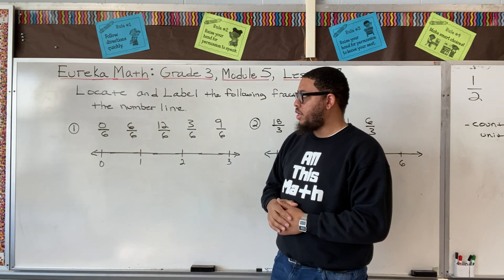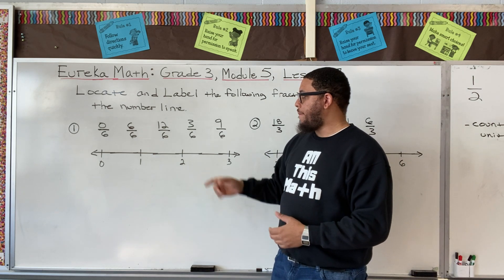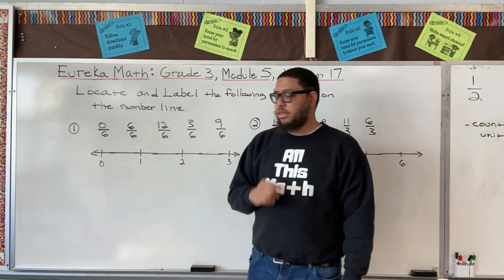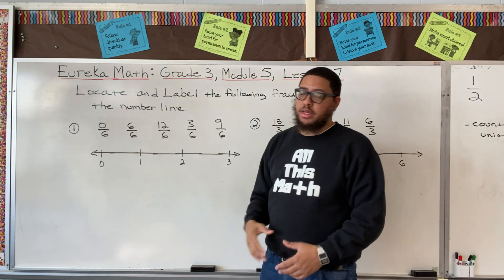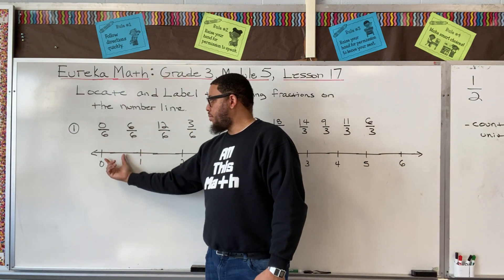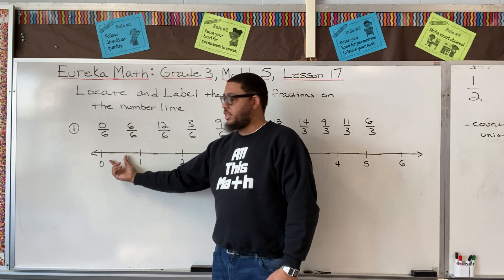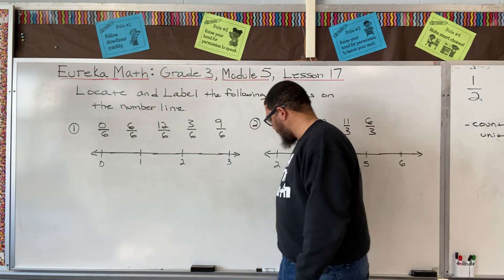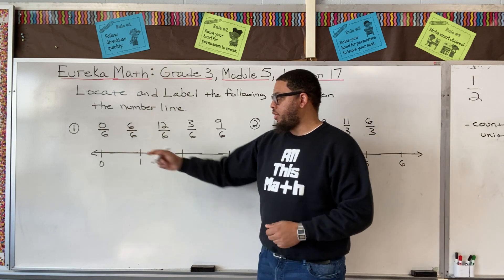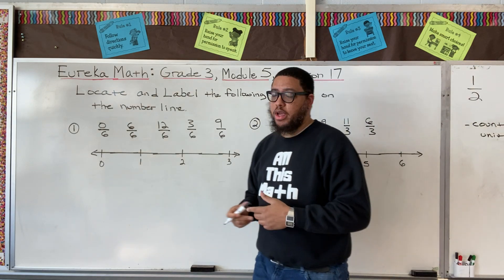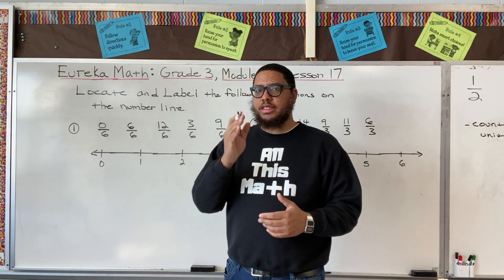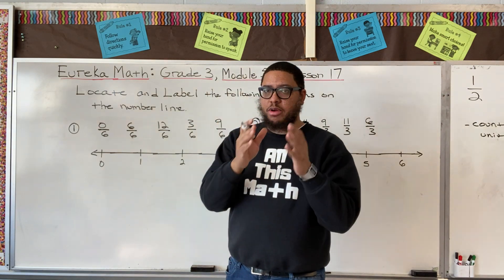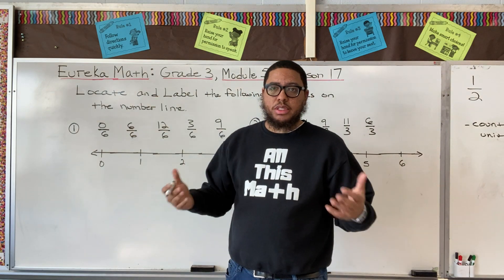We've got these five fractions and we want to locate and label them on the number line. First, based on the denominator, I want to label hash marks. Because my denominator is six in all of these fractions, I'm going to create six spaces between each pair of whole numbers. The way I do that is I find the halfway mark between zero and one, draw a hash mark there, and then create three spaces on the left and three spaces on the right — a total of six spaces.